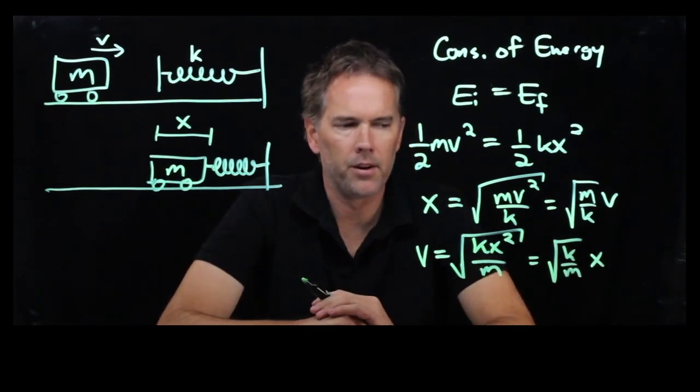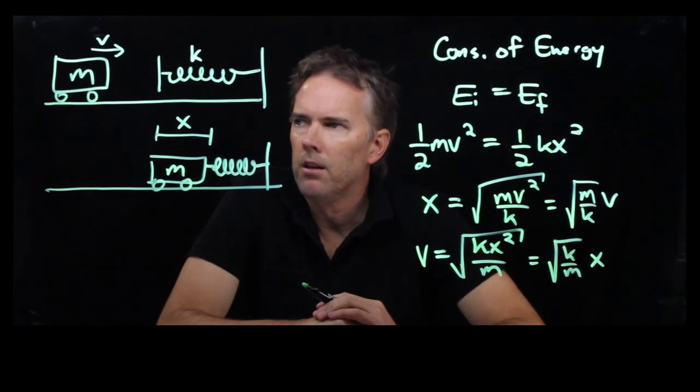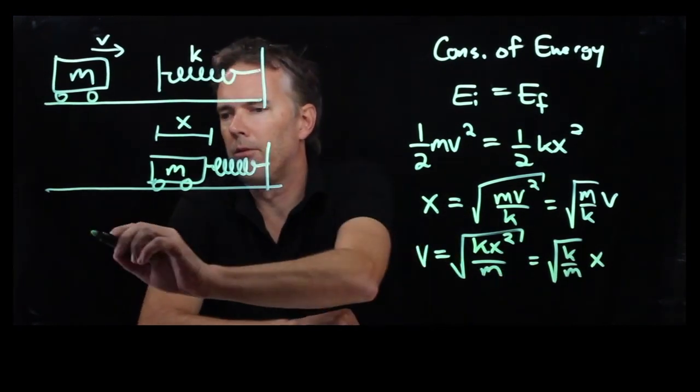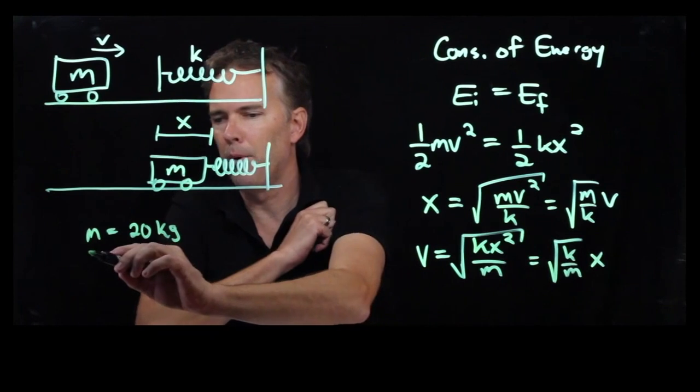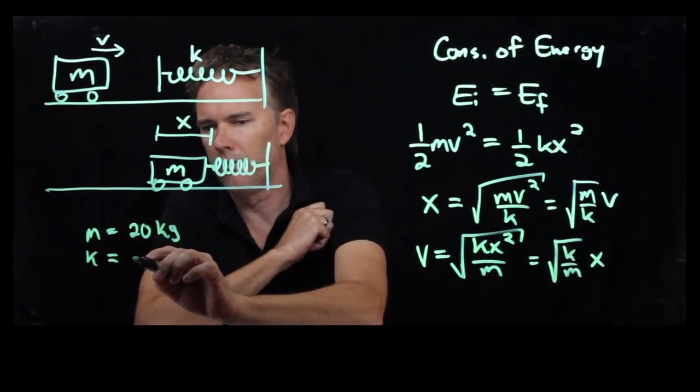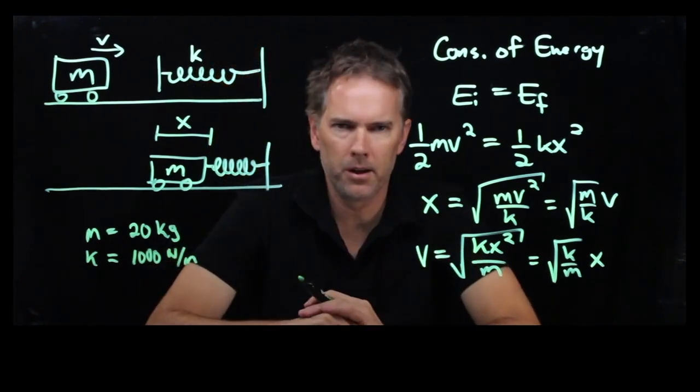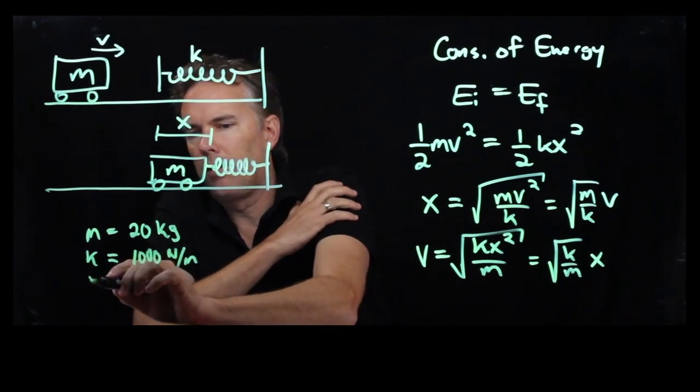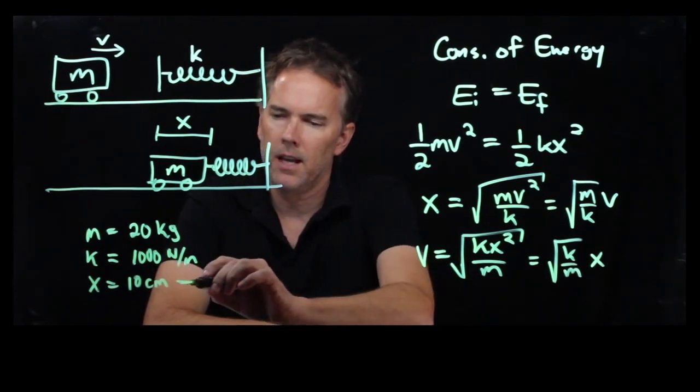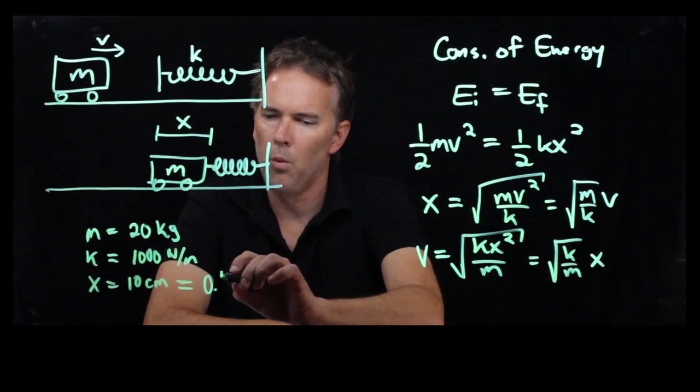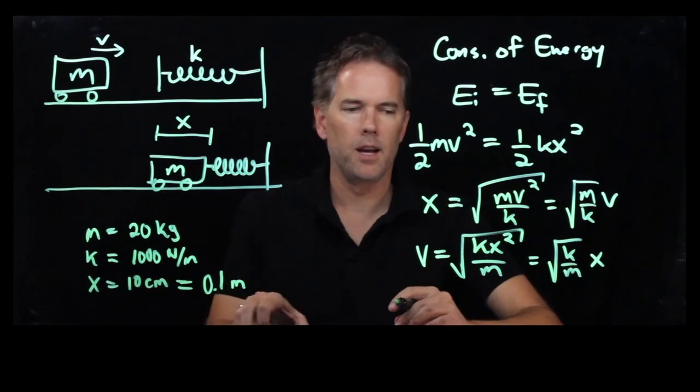Let's try some numbers and see what works out. Let's pretend that the mass of this thing is 20 kilograms. Let's say the spring is fairly strong, so we'll say a thousand newtons per meter for the spring constant. And let's say that x is 10 centimeters, that's how far the spring got compressed. In SI units, that's 0.1 meters.